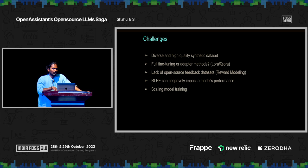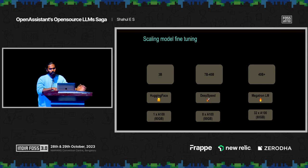RLHF can also negatively impact the model's performance — for example, a model might know coding and math well, but after alignment it might forget some specific aspects like math. Regarding scaling, we scaled models from 3 billion to 70 billion parameters, and the infrastructure we worked on ranged accordingly.